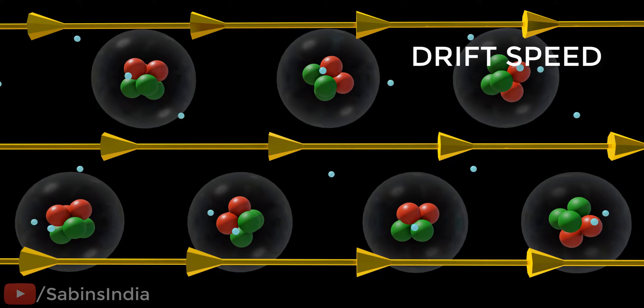We call this speed drift speed. If you can figure out the magnitude of this drift speed, it is very easy to calculate the value of current.